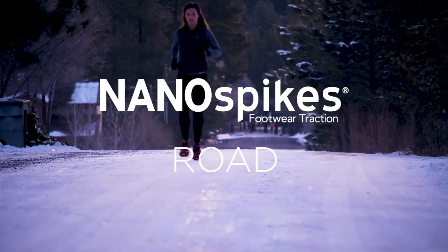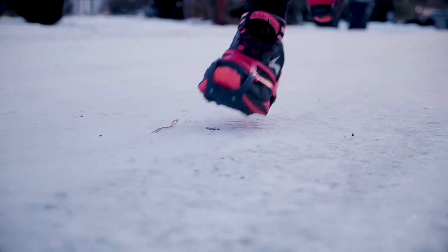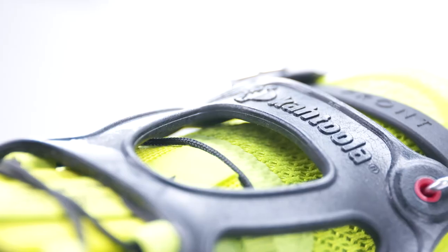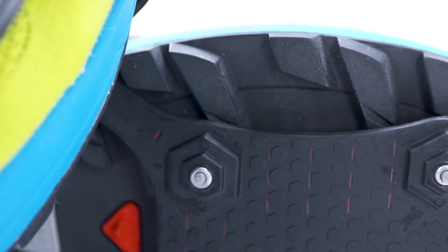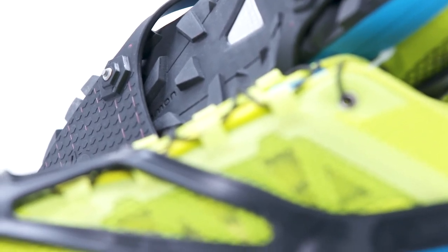If we start from the smaller spiked NanoSpikes, that was our first foray into the carbide with the TPU cleat. It does not wear out on pavement and whatnot. So, that's a great road running thing. And it's also a short spike, so you can run on hard surfaces and not wear your foot out. Now, that's a short spike, so it's not going to dig into the trail as much when you're on the steep trail.